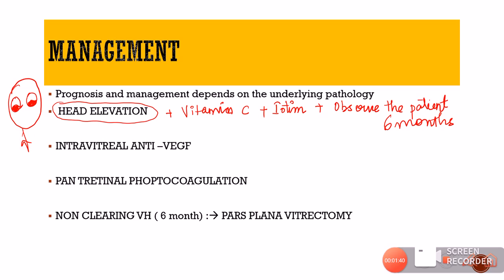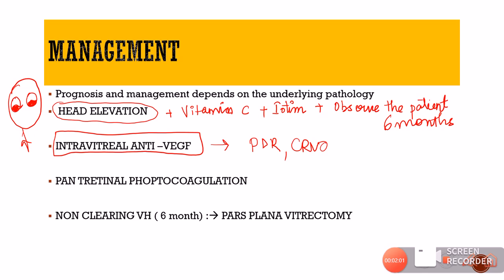Medical treatment includes intravitreal anti-VEGF agents such as Lucentis or Avastin. These are given especially in cases of neovascularization like proliferative diabetic retinopathy and central retinal vein occlusion, where neovascularization is the suspected cause of vitreous hemorrhage.